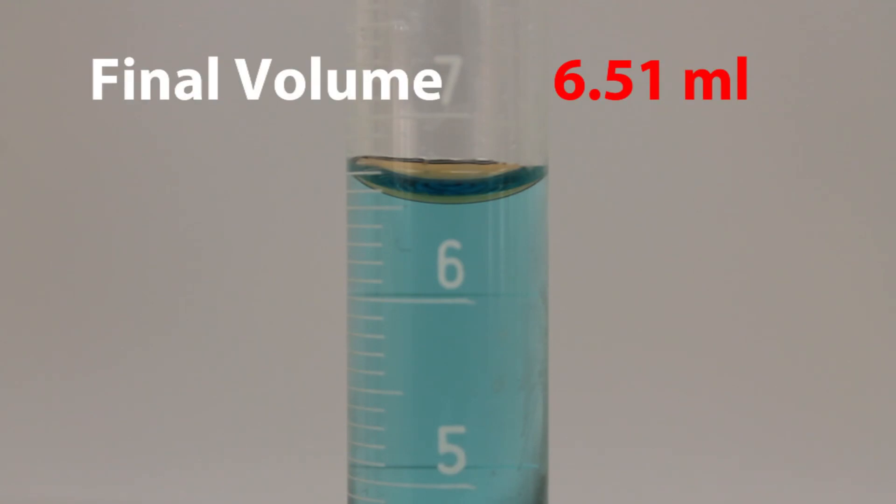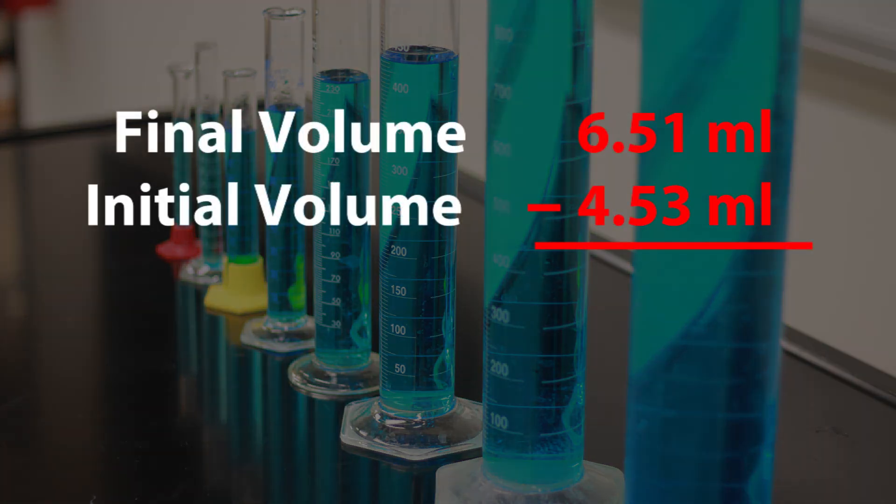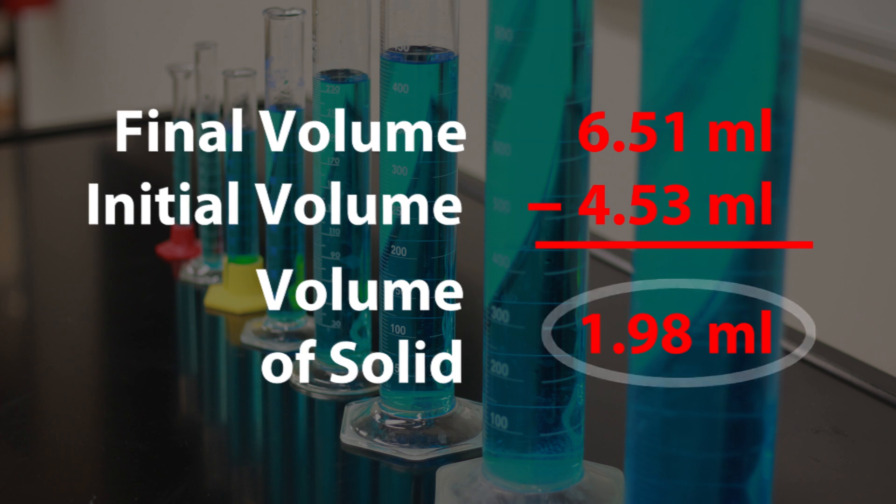Record the final volume. I recorded 6.51 milliliters. Now take your final volume and subtract the initial volume. The results will give you the volume of your solid object.